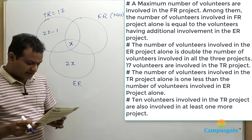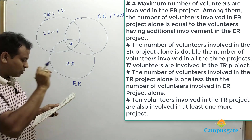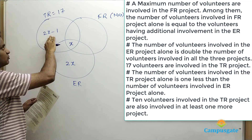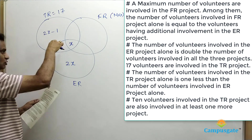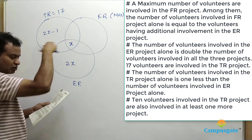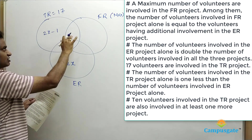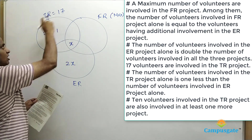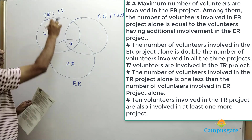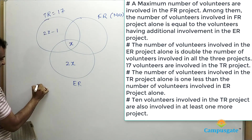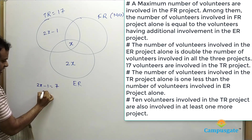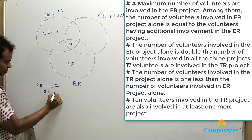The last clue: 10 volunteers involved in TR project are also involved in at least one more project. That means the three overlap regions of TR together equal 10. If those three regions equal 10, and the total value of the TR circle equals 17, then TR alone equals 7, since 7 plus 10 equals 17. Therefore, 2X minus 1 equals 7, giving X equals 4.